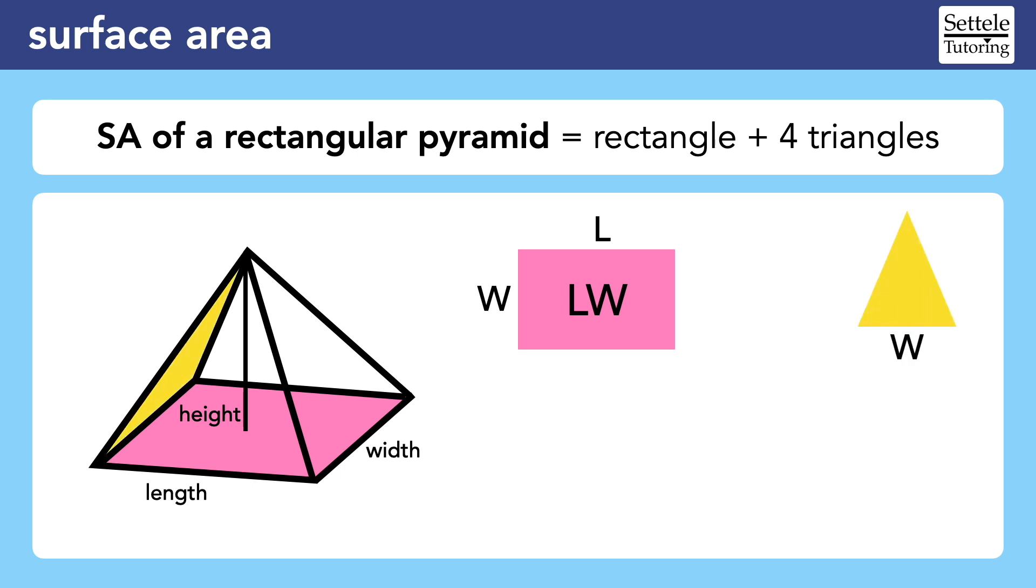We can hopefully see that there are two types of triangles. On the back left, the yellow triangle has a base that matches with the width of the rectangle. Also in the back, we see a different triangle with a base that matches the length of the rectangle.